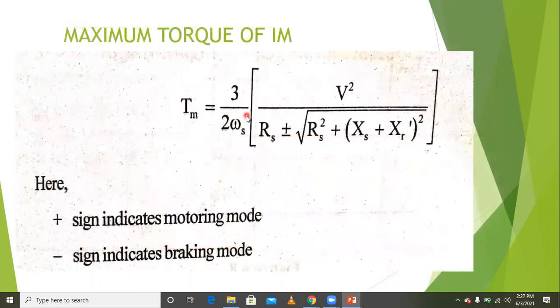Next is the maximum torque equation. To find the maximum torque, differentiate torque with respect to slip: dT/ds = 0, and you will get the maximum torque.